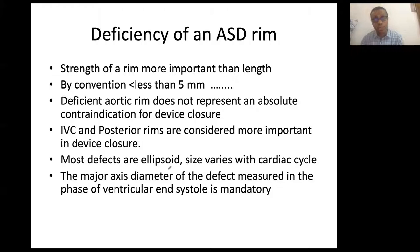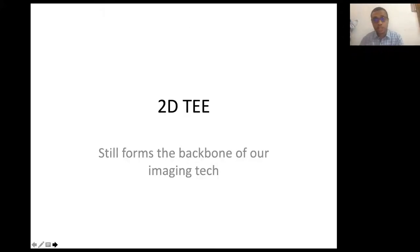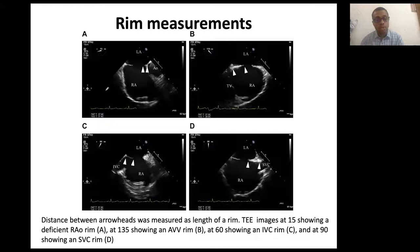We have a major axis measuring, say, 20 mm and a minor axis of 10 mm. In most of our cases we go with the major axis and do not upsize — we take a 20 mm device and see how it sits. The major axis diameter is measured at ventricular end-systole, which is the phase of the cardiac cycle where the atrial septal defect is at its maximum length. 2D TEE still forms the backbone of our imaging technique.